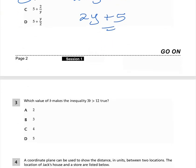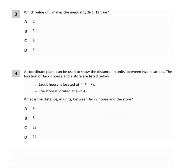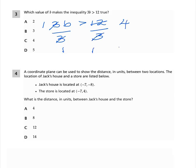Question 3: Which value of B makes the inequality 3B greater than 12 true? To get your answer, you simply divide both sides by 3. 3 divided into 12 is 4, so B is greater than 4. The right answer is C.